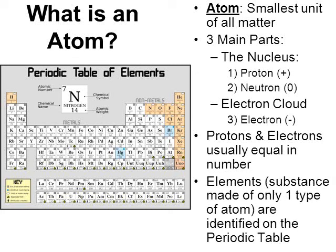When you look at this periodic table of elements — you've seen this before, I'm sure — the periodic table of elements is a collection of elements that are known to exist. So how is an element different from an atom? Well, an element is a substance made from only one type of atom.